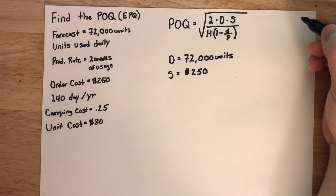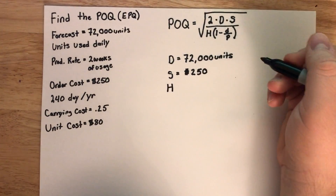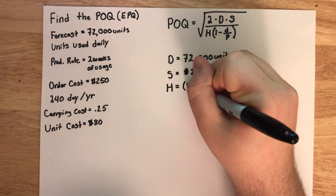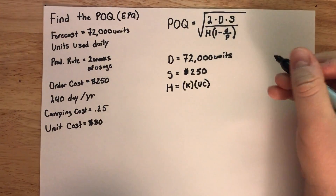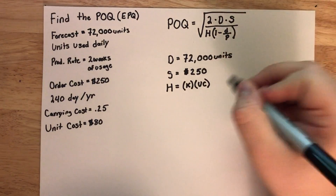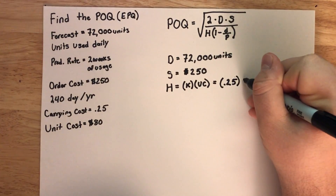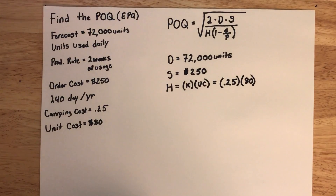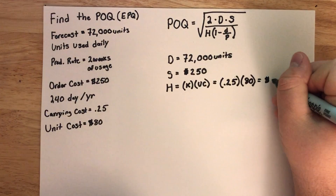We then need h. H is defined as the holding cost per unit per year. We do not have h explicitly, but we can find it based on what is given in the problem. H is defined as k, which is the holding cost rate, times the unit cost. We know that the carrying cost is 25% of the unit cost, and the unit cost is $80. If we calculate that, we find that the holding cost is equal to $20 per unit per year.